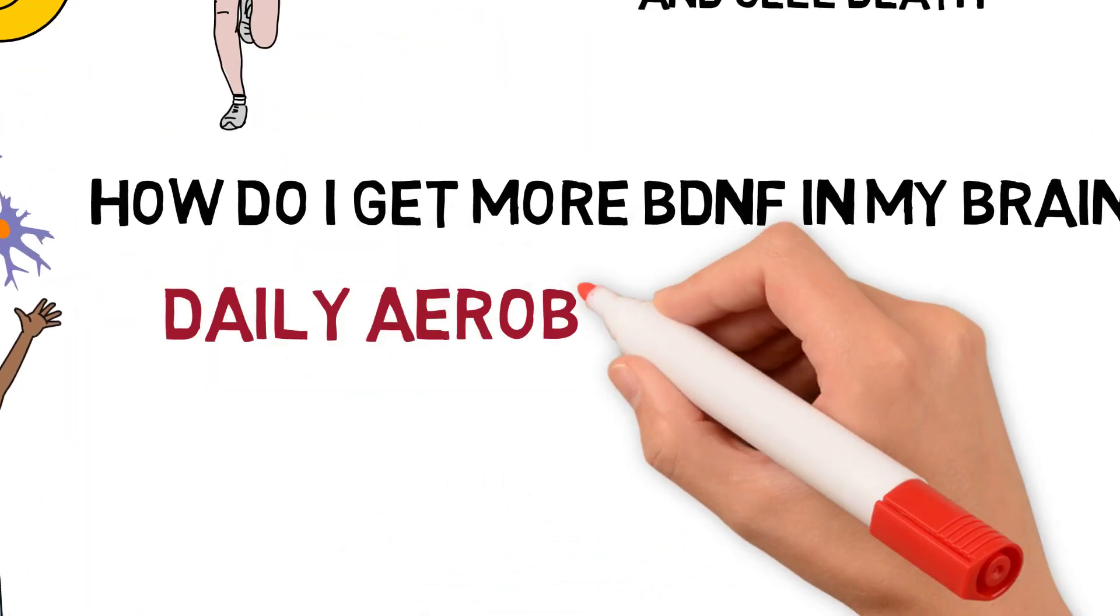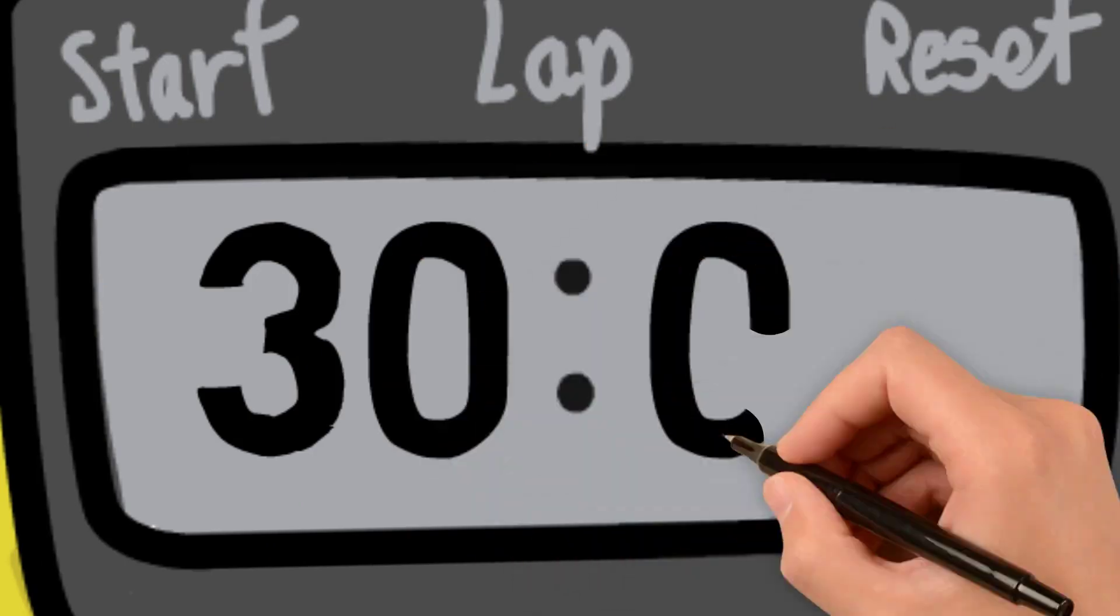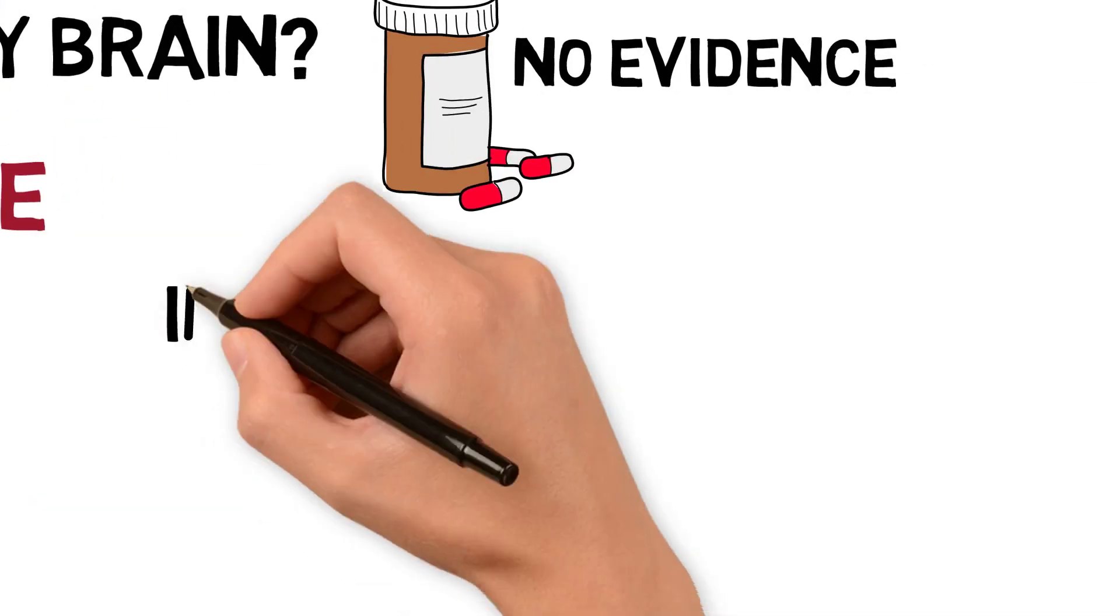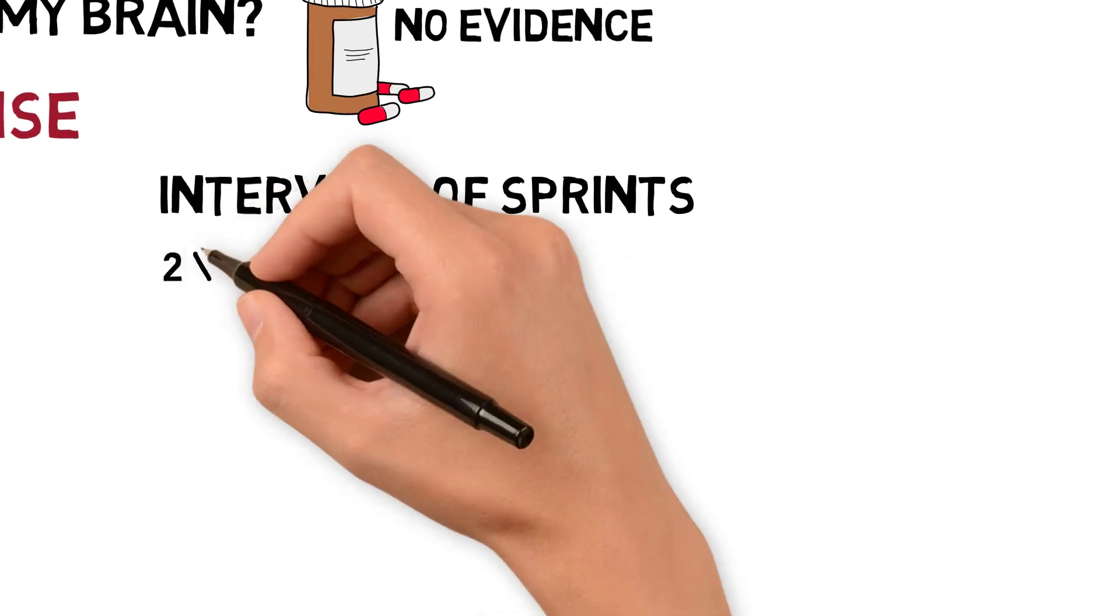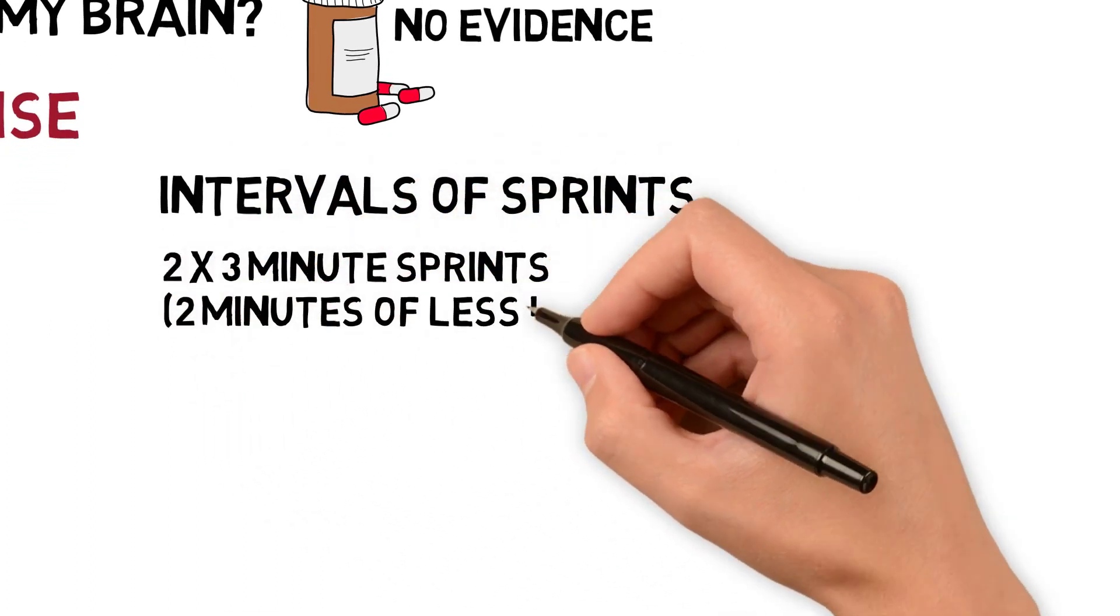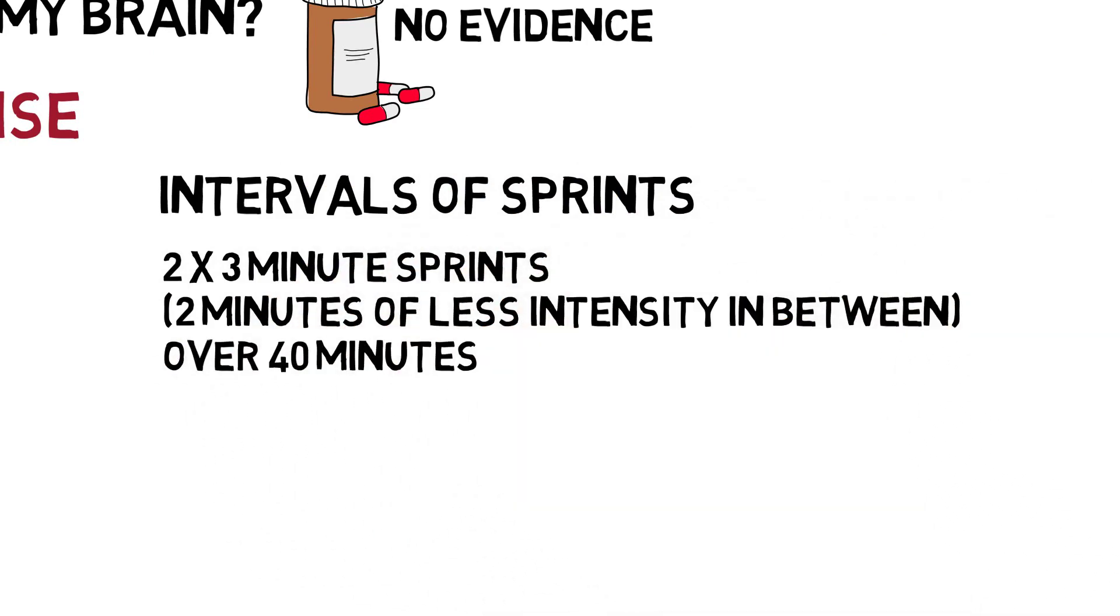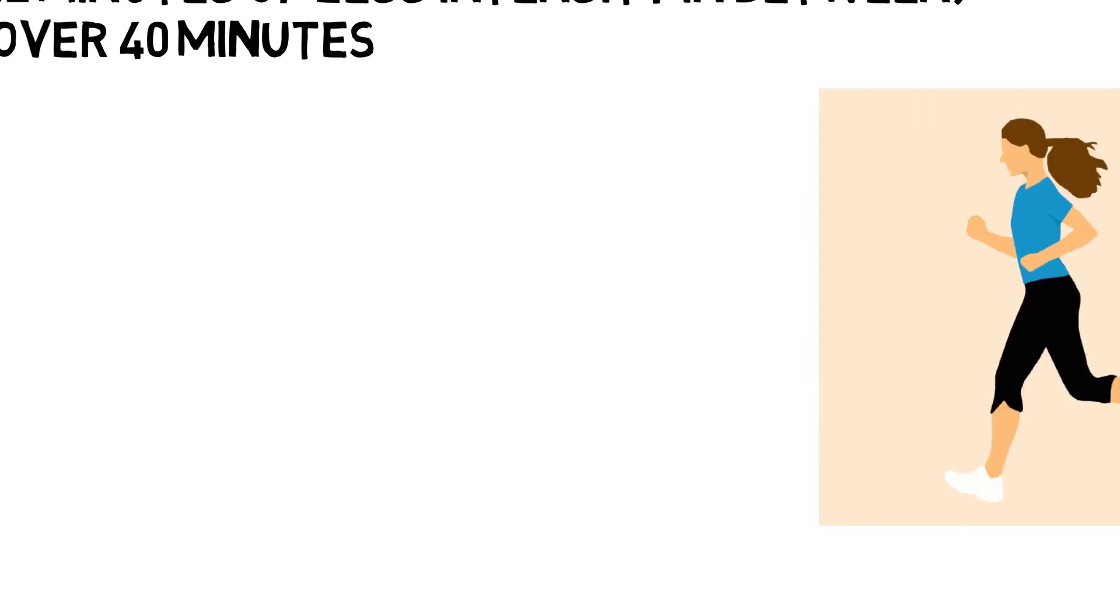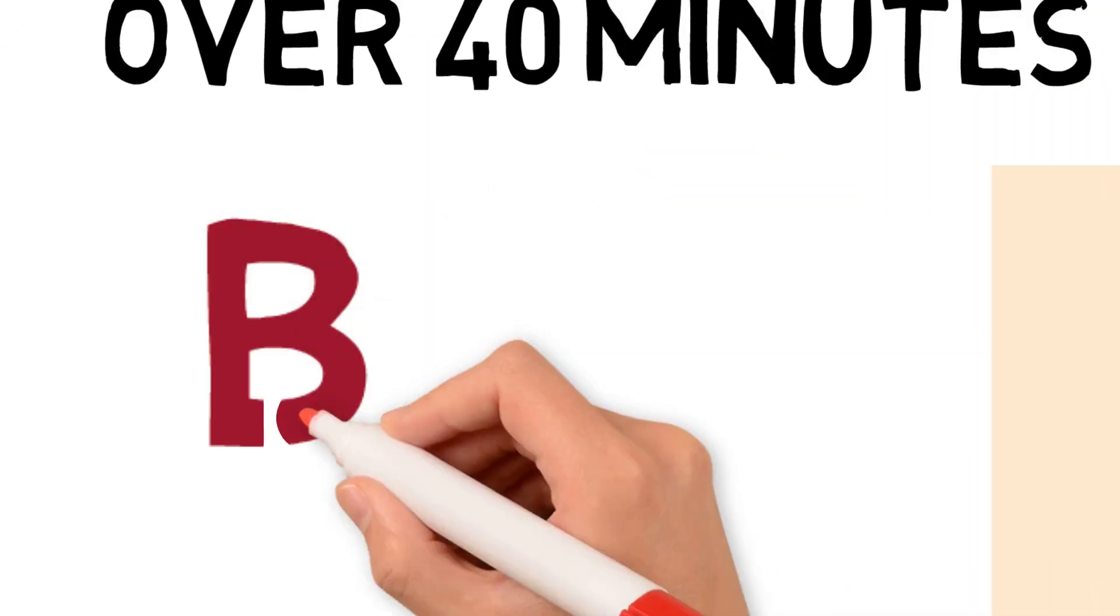Daily aerobic exercise is best, at least 30 minutes, but including intervals of sprints is even better. In a recent German study, volunteers who did two three-minute sprints separated by two minutes of lower-intensity exercise during the course of a 40-minute treadmill session demonstrated higher increases in BDNF than non-sprinters.